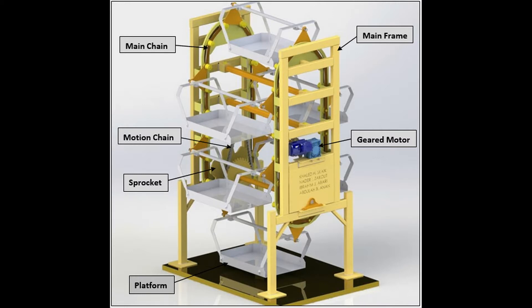Firstly, the mainframe, which is two parallel structures connected to each other through a metallic rod. The aim of this mainframe is to give the rotary motion to the system. The output rating of the motor should be chosen based on the load of the system at extreme conditions. Thirdly, the platforms — the platforms will be the housing for the cars. The motion chain will transfer the rotary motion from the motor to the sprockets.